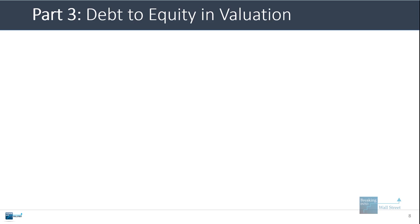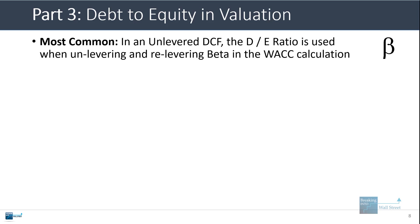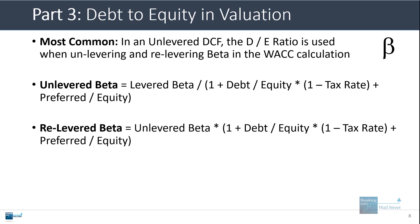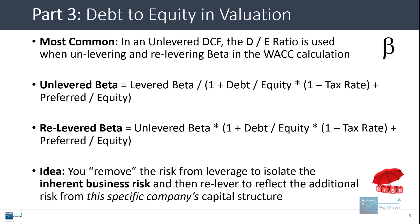Let's talk about debt to equity in a valuation context. The most common way this comes up is when building an unlevered DCF using WACC as the discount rate — the debt to equity ratio is used when unlevering and relevering beta. The formula for unlevered beta is: you take the levered beta (from Bloomberg, FactSet, Capital IQ, or other sources) and divide by one plus the debt to equity ratio times one minus the tax rate, plus the preferred stock to common equity ratio. To relever beta, you take the unlevered beta and multiply by that whole term. The idea is to remove the risk from leverage to isolate the company's inherent business risk, then relever based on the company's capital structure to reflect the additional risk from that capital structure.